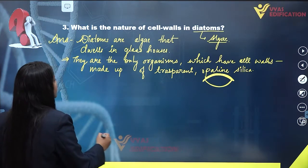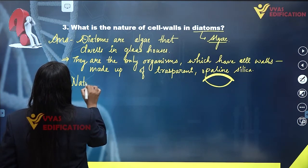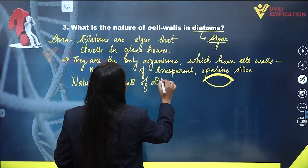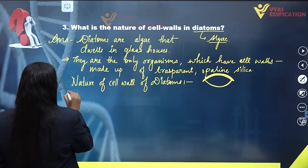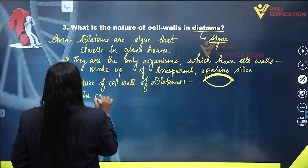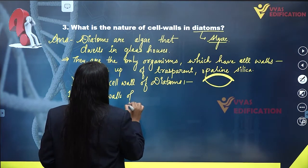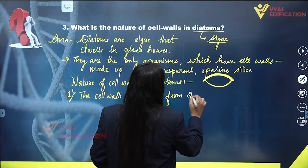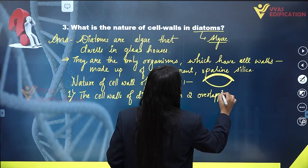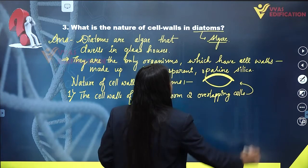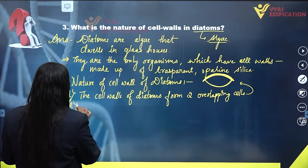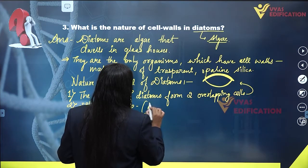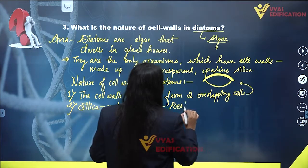Hence, they are non-destructible, because they have cell walls made up of silica. Regarding the nature of cell walls of diatoms: the cell walls of diatoms form two overlapping cells, and the cell wall is made up of silica, hence they are non-destructible.